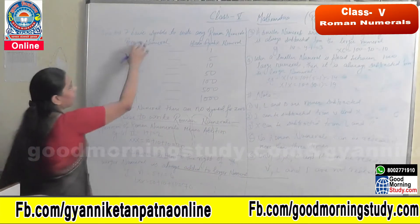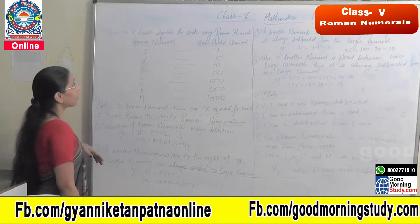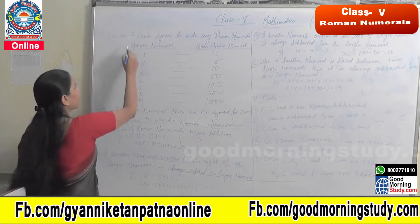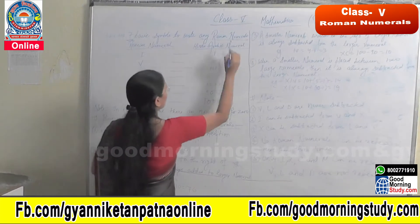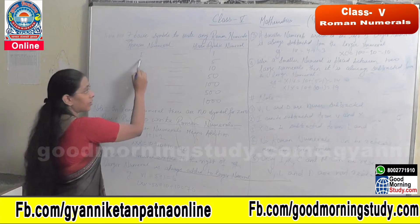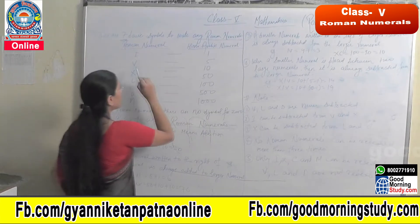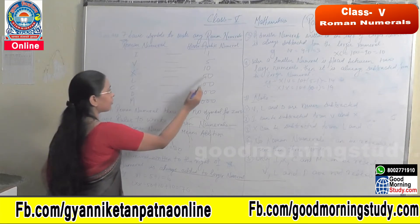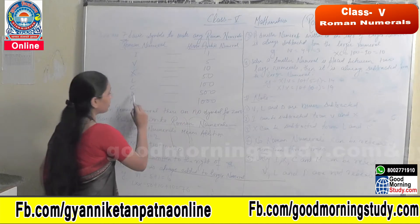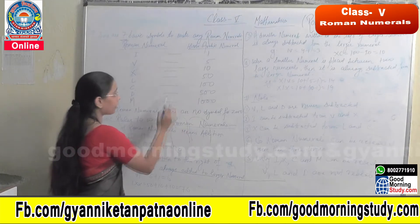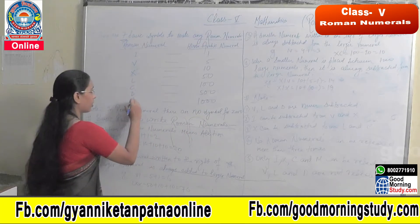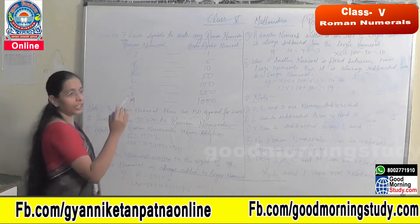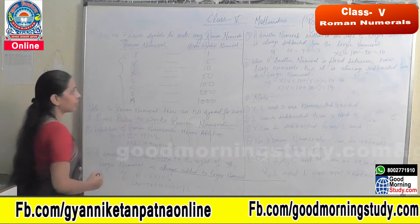There are 7 basic symbols to write any Roman numerals. First is I, which stands for 1. V stands for 5. X stands for 10. L stands for 50. C stands for 100. D stands for 500. And M stands for 1000. We can write any Roman numeral using these 7 basic symbols.